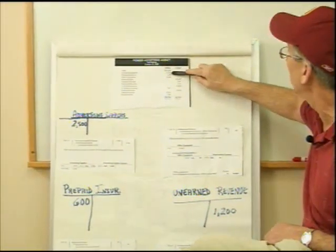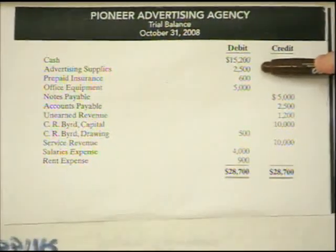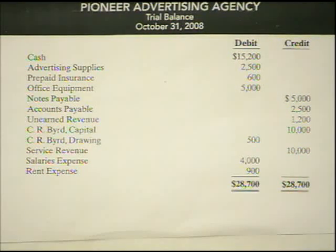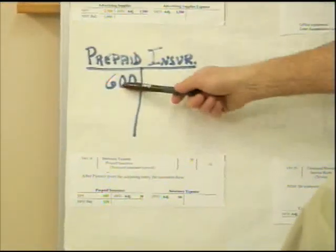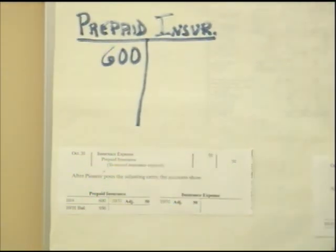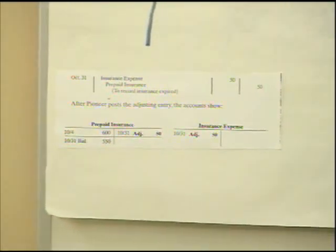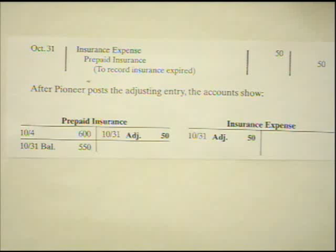Certain accounts on the trial balance are continuously adjusted at the end of every month. The next account would be any prepaids — as I mentioned in the last chapter, prepaids must also be adjusted as they're used. In this case we have $600 worth of prepaid insurance. In that general ledger T-account we'd have $600, and this is October. We need more facts: it was paid for a one-year cycle covering October 31st through September 30th, and we're now at October 31st, meaning one month has gone by.